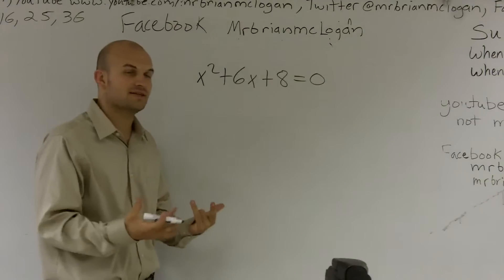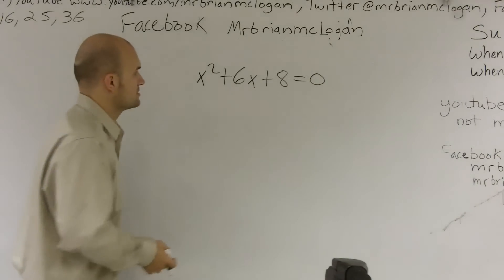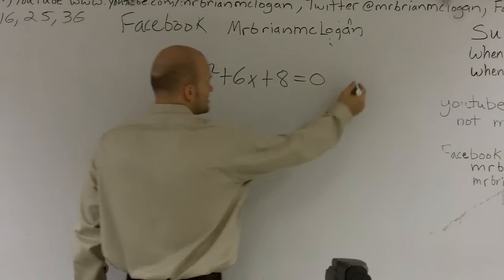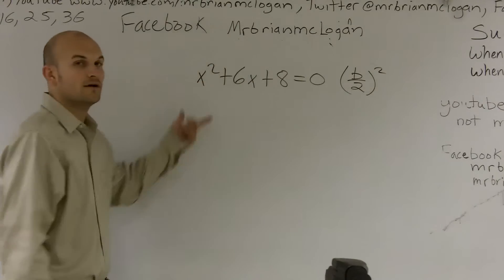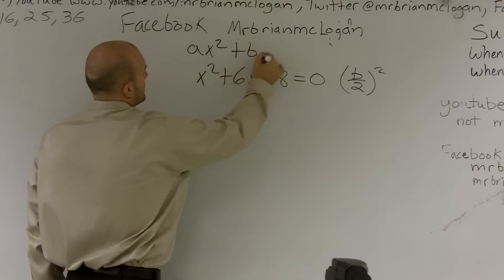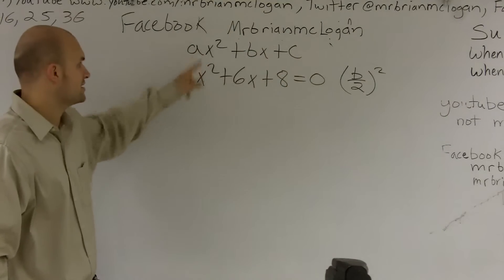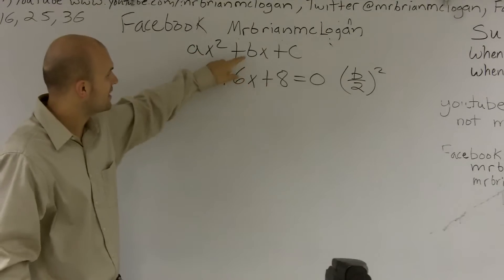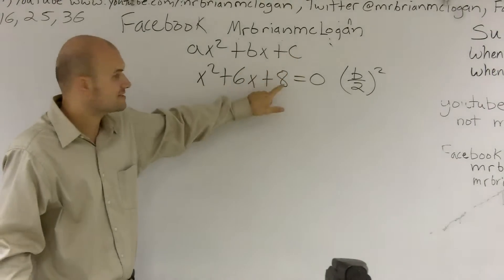So when we're completing the square, again, our purpose that we're going to want to try to get is a binomial square. And the way that we do that is by this little step called b over 2 squared. To know what b is, you have to know what a quadratic equation looks like. So your coefficient of your x squared is going to be a, which in this case is 1. Your coefficient of your x value is b, in this case it's 6. And your c is your constant, in this case it's 8.